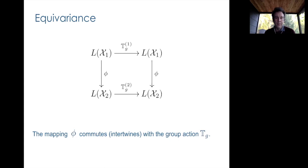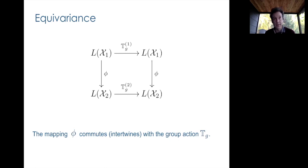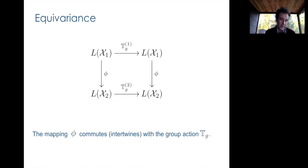Equivariance means that the phi transformation commutes — or more generally, intertwines — with the group action. That means if you take your object, let the group act on it first and then apply the phi mapping, you get exactly the same answer as if you applied the phi mapping to the original object first and then applied the group transformation in the transformed space.